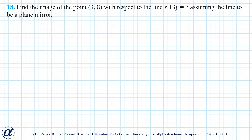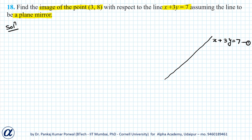In this question, we want to find the image of the point (3, 8) with respect to the line x plus 3y equals 7, assuming the line to be a plane mirror. Let's say this is our line x plus 3y equals 7 — let's give it number 1. Let's say this is our point (3, 8); let's call it A.